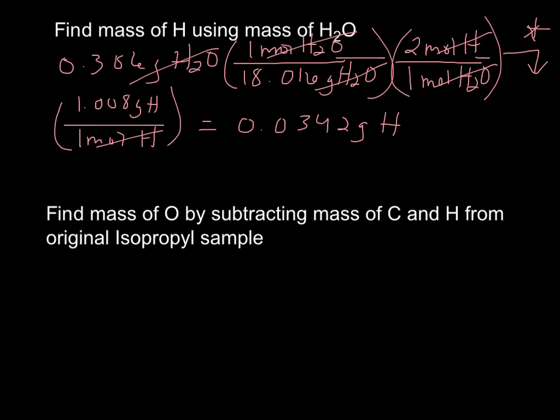And now for oxygen, we find the mass of oxygen by subtracting the mass of carbon and hydrogen from the original isopropyl alcohol sample. Since oxygen is present in CO2 and in H2O and in the O2 and in isopropyl alcohol, it's easily found through subtraction here.